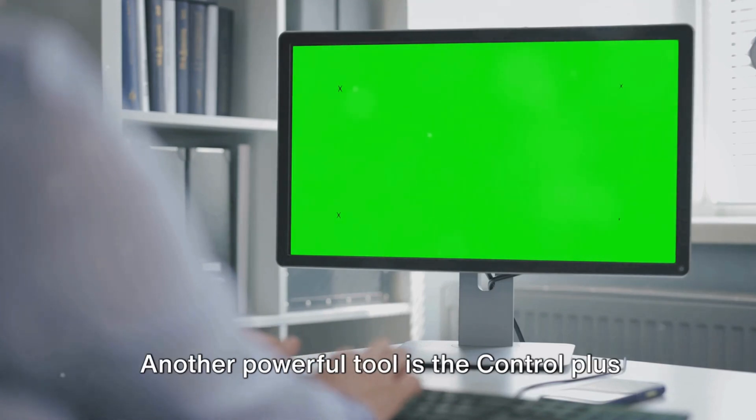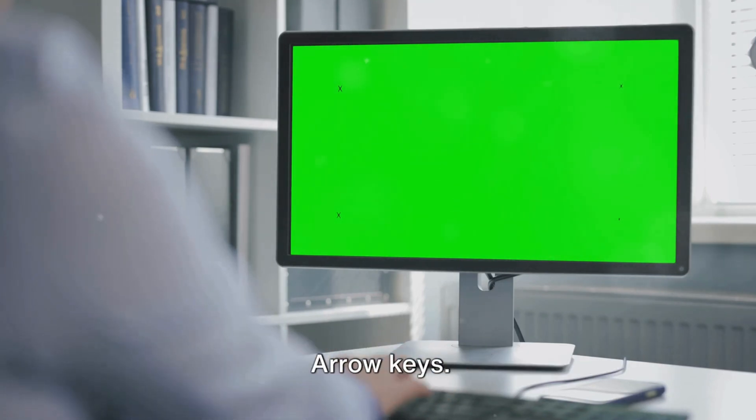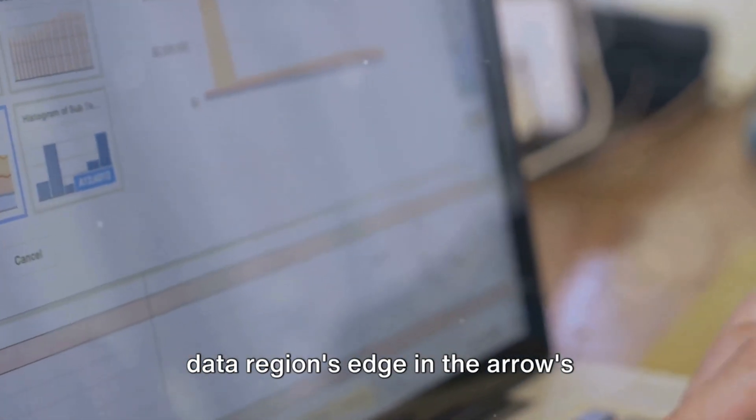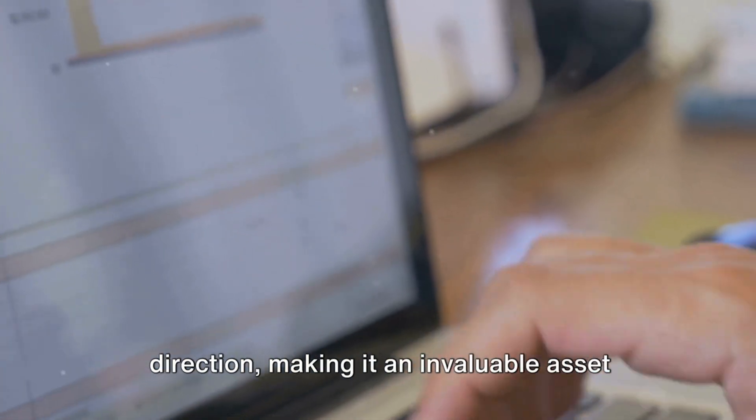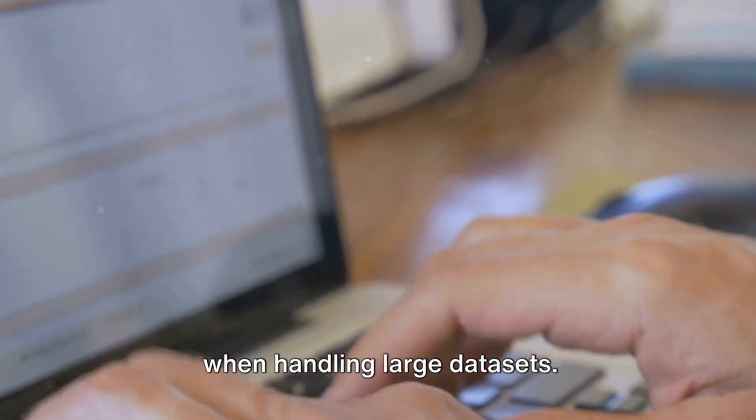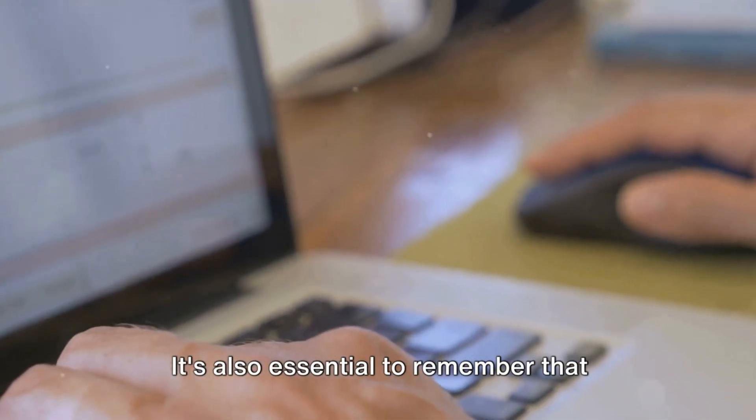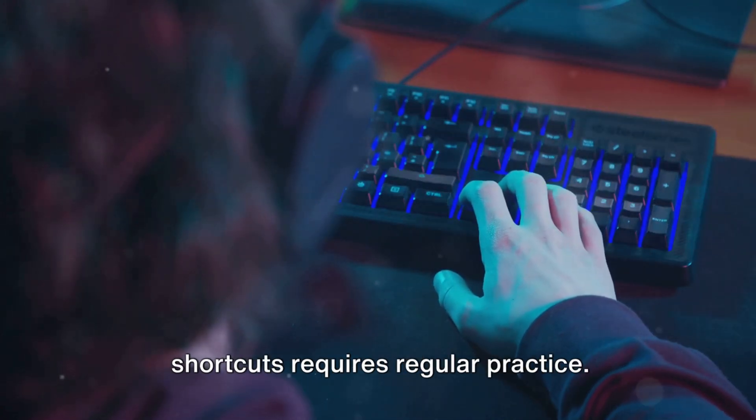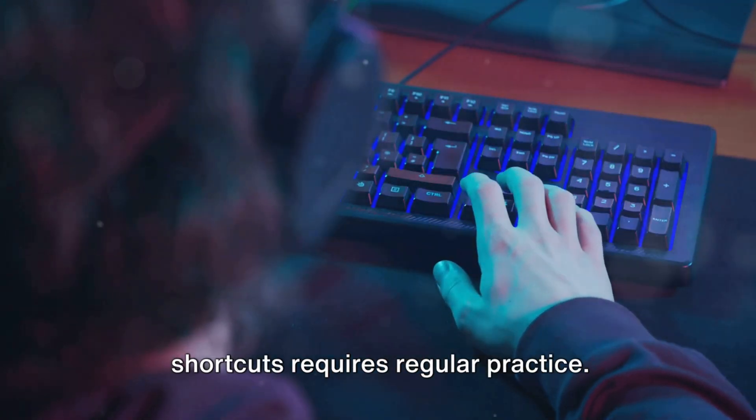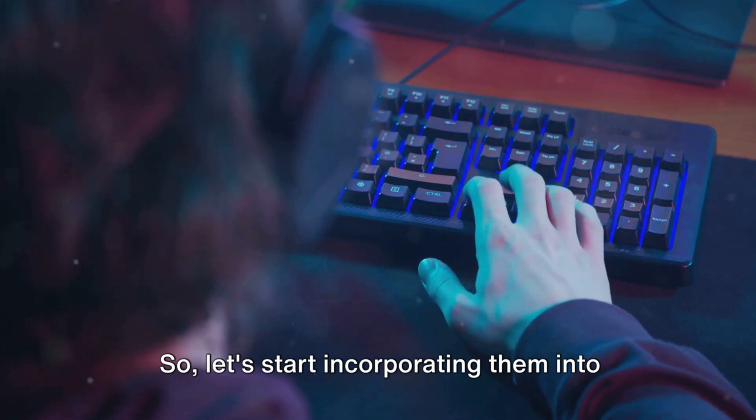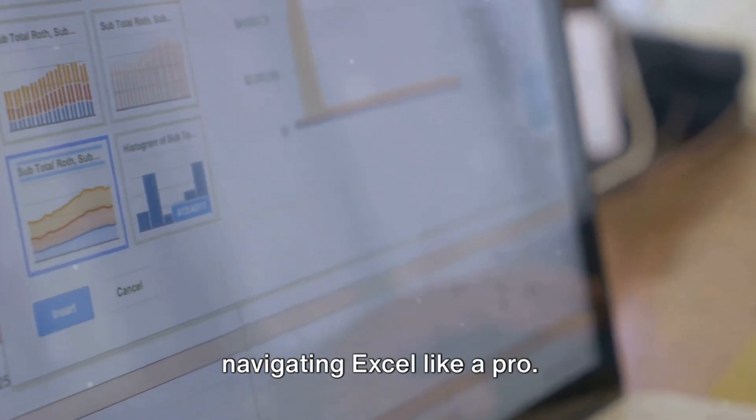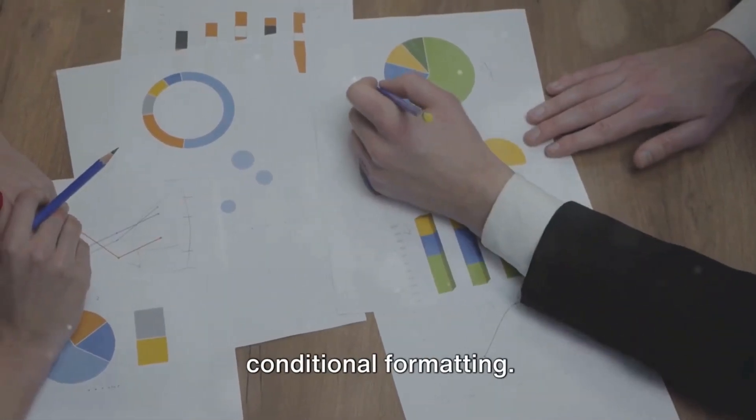Need to insert a new column or row? The combination of Control, Shift, and Equals keys will make it a breeze. Control plus arrow keys swiftly move the cursor to the data region's edge, invaluable when handling large data sets. Achieving proficiency with these keyboard shortcuts requires regular practice, so let's start incorporating them into our routine.